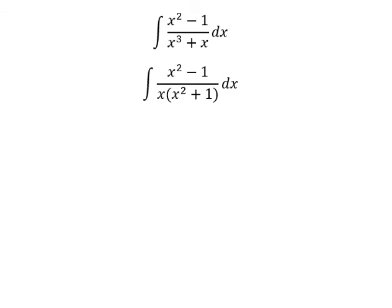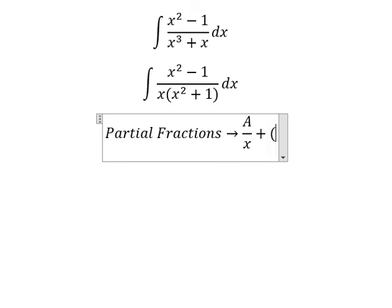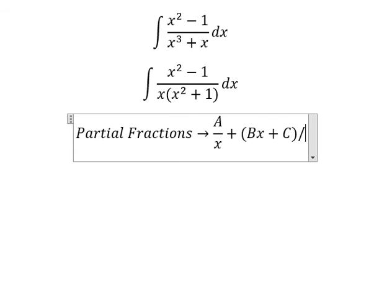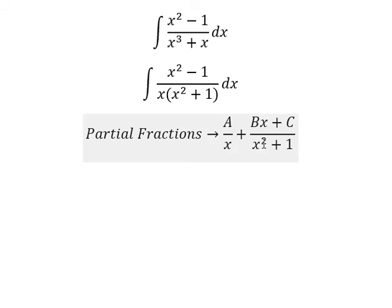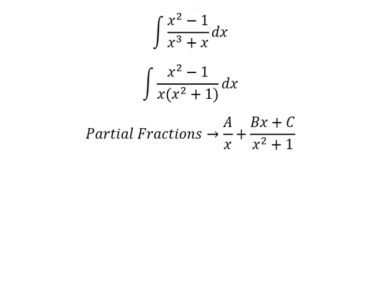Now we can use partial fractions, so I will put capital A over x, and capital B times x plus C over x squared plus one. Because this is about x to the power of two, on the numerator we need to have x to the power of two minus one — that means we need to reduce one unit of the power, that's why we have two minus one. And then we reduce from number one to number zero, that's why we have C in here. Now we need to do common denominator.